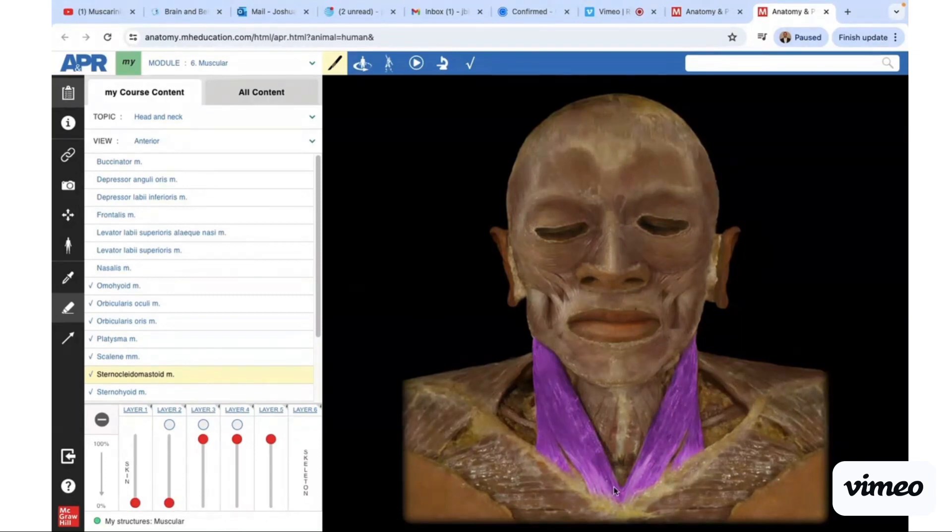If you contract bilaterally, you're going to get flexion of the cervical spine and flexion of the head forward. If we reverse the origin-insertion—the origin is always the fixed point and the insertion is what's moving—if we now make the mastoid process the fixed point, then the insertions would be down here on the manubrium of the sternum and the clavicle.